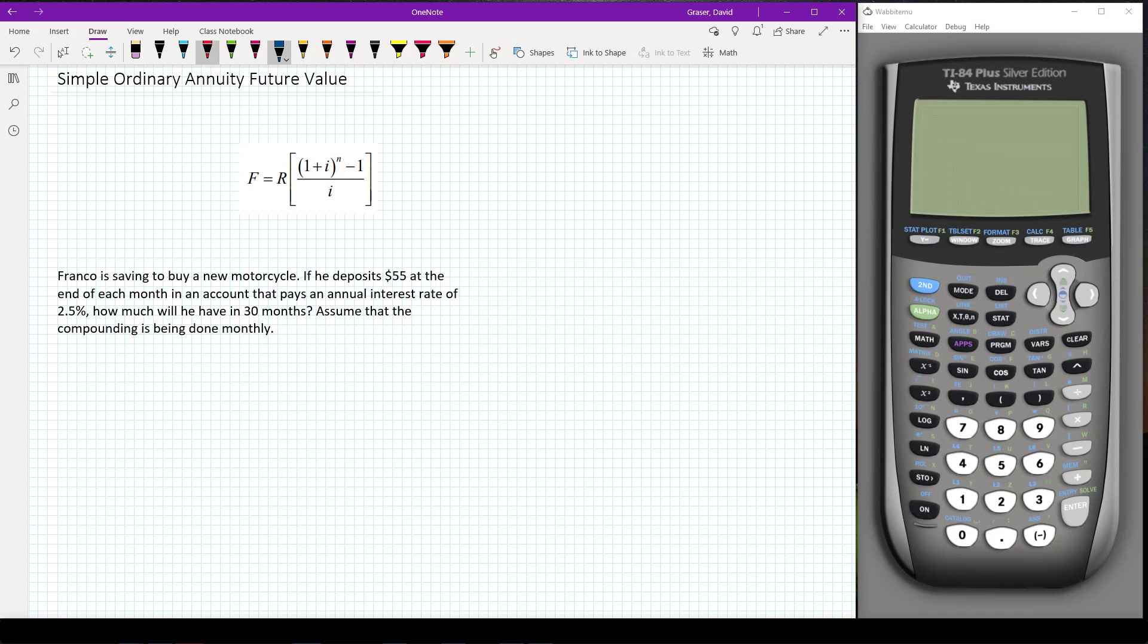So here, what you have in front of you is our simple ordinary annuity formula. Remember, the F is the future value, the R is the payment, I is the interest rate per period, and the N is the number of periods.